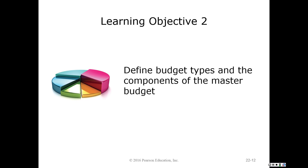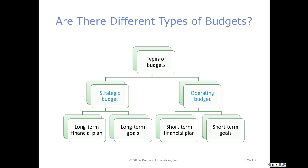There are two different types of budgets: strategic and operating. A strategic budget, as your book says, is more of a long-term financial plan with long-term goals. For example, if this is 2016, you may hear of organizations that have a 2020 plan — what are our goals we want to obtain by the year 2020? Others might have a 10-year or 20-year plan. It usually covers a longer period of time and is not as detailed as an operating budget.